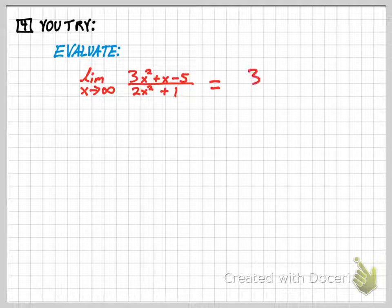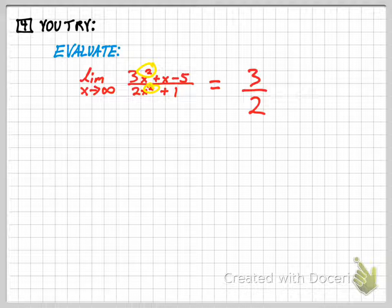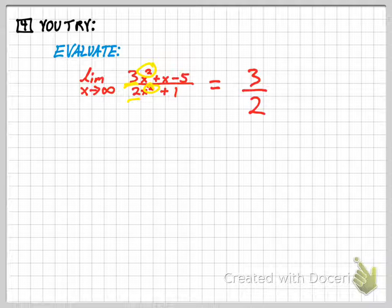Let's hope everybody got it. The answer for this one is 3 halves. This is a problem where you have equal powers on the numerator and the denominator. So we should go to the coefficients and 3 halves is your answer.